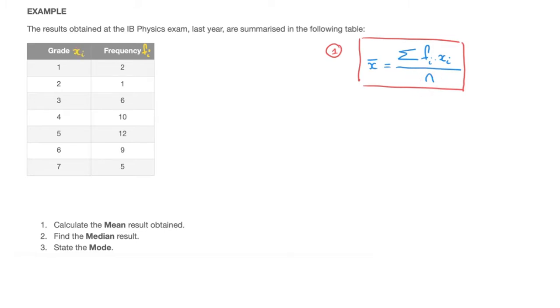The n on the denominator refers to the total number of values we have. To find it, we calculate the sum of all the frequencies in our table. We typically write the total at the bottom of the column, in this box here. So calculating 2 plus 1 plus 6 plus 10 plus 12 plus 9 plus 5, I find that equals 45.